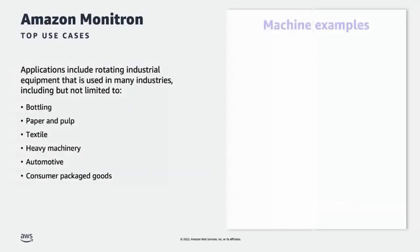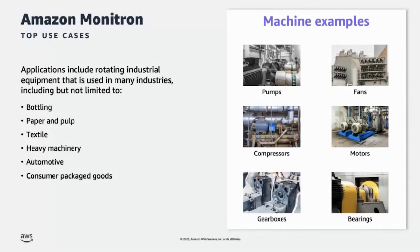Monitron is focused on rotating equipment like motors, pumps, bearings, and gearboxes that are used in multiple industries including bottling, paper and pulp, textiles, heavy machinery, automotive, and consumer packaged goods. Later in the presentation, we will dive into the Monitron implementation at a customer site in the healthcare industry as well.